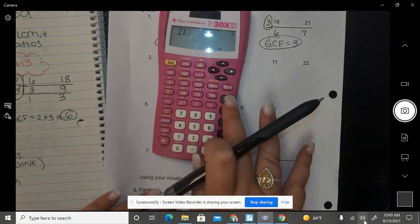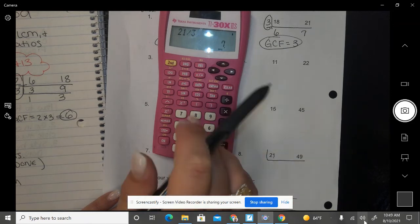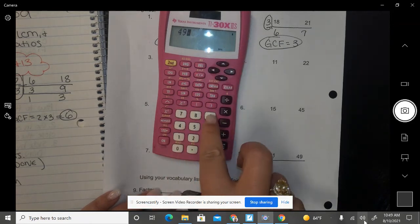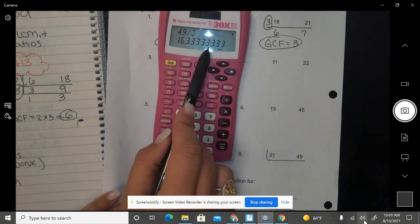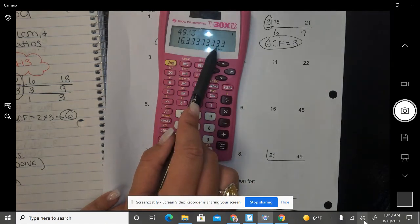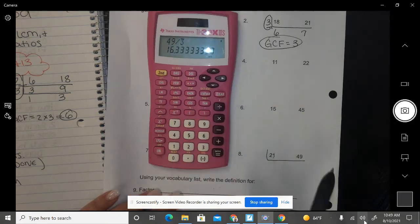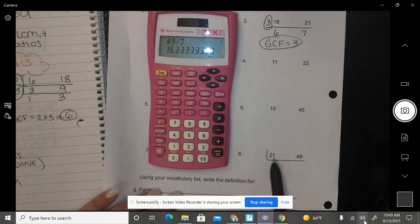So I'm going to do 21 divided by 3. I get the whole number 7. 49 divided by 3, I don't get a whole number here. I get a decimal number, so 3 is not going to work. So 5, I know 5 is not going to work because when you skip count by 5, 5, 10, 15, 20, 25, 30, they either have a 5 or a 0 at the end, and these do not have a 5 or a 0 at the end, so 5 is not going to work.